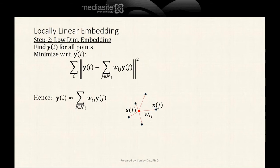Step two is called low-dimensional embedding. At this point, we have found the weights Wij from our first step. Now our goal is to find Yi, the low-dimension embeddings of the Xi.